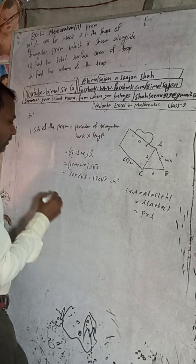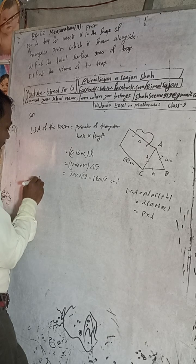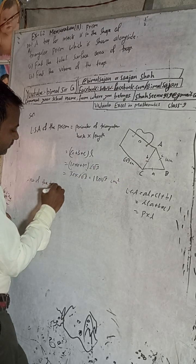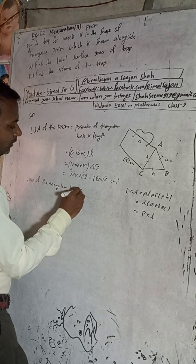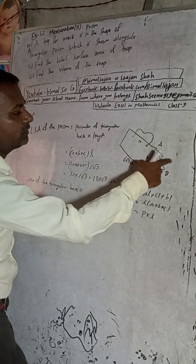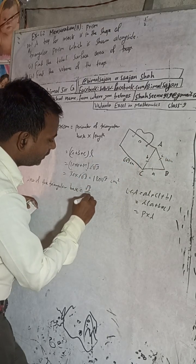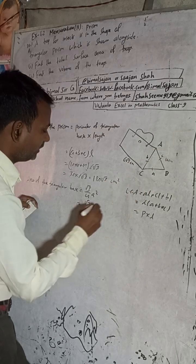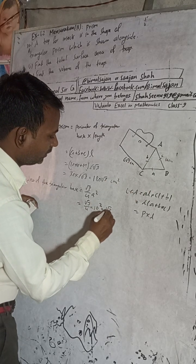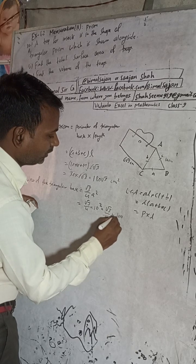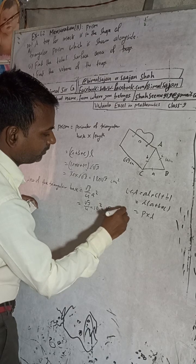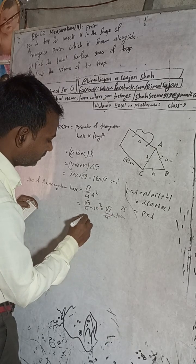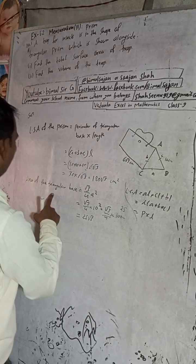Now find the area of the triangular base. Since all three sides are 10, this is an equilateral triangle. The formula for an equilateral triangle is √3/4 × a². So area = √3/4 × 10² = √3/4 × 100 = 25√3 cm².